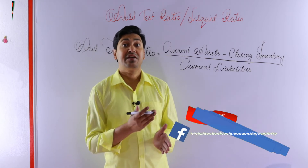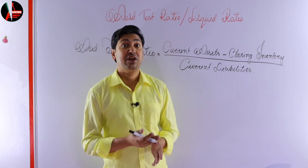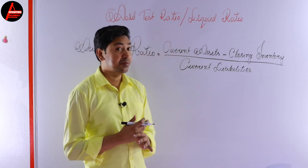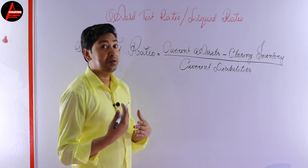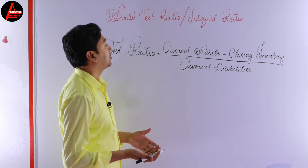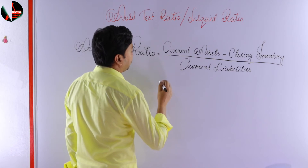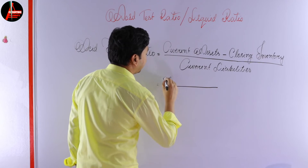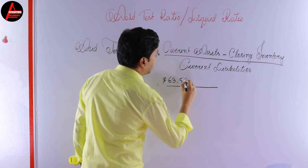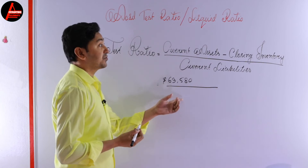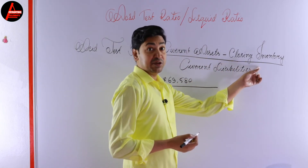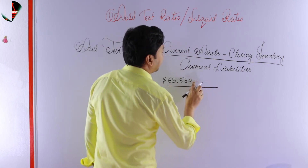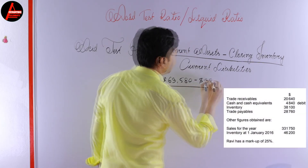Opening inventory will go in the income statement when you calculate gross profit. So we will not take opening inventory — we will take only closing inventory. In my previous lesson, the total current assets for this question was $63,580. From this value, we need to subtract the closing inventory, which is $38,100.